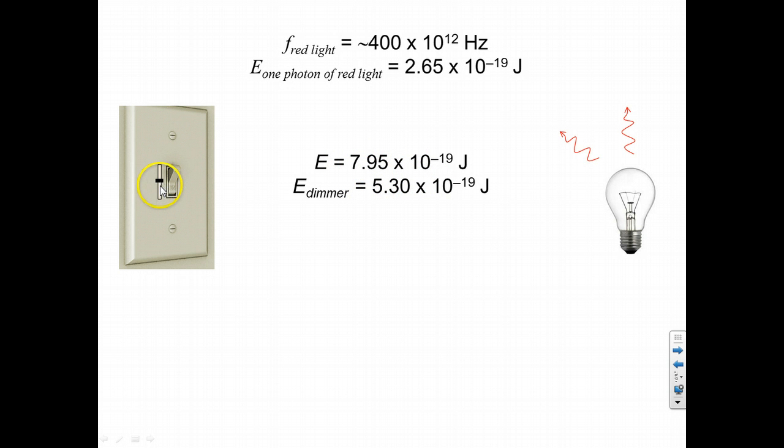And if we want to bring this light switch down again, then now we've taken away another photon. And that's the smallest that we can lower the slide by. We can only lower the slide by an amount which would produce one less photon of light.